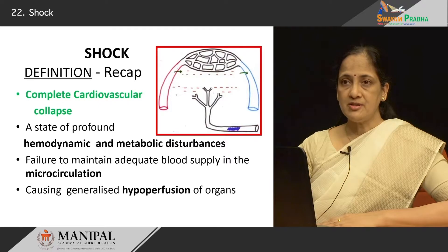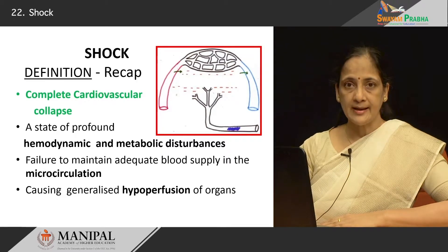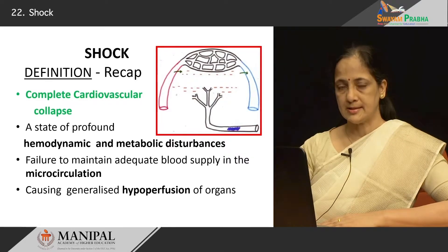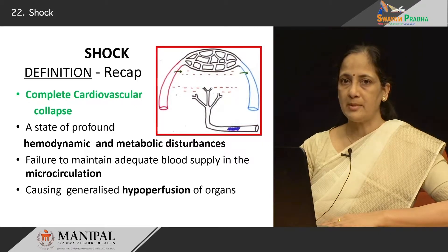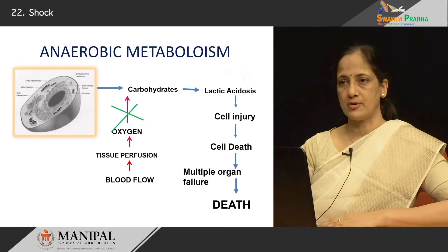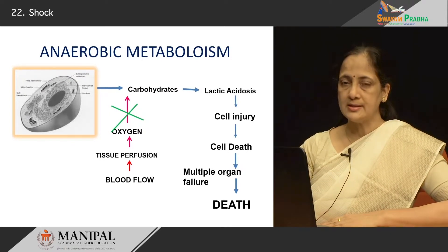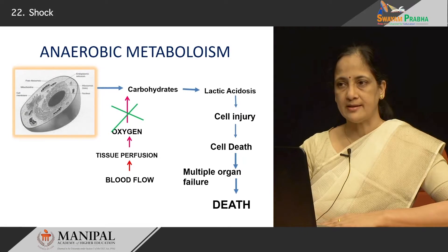The cells which were initially reversibly injured become irreversibly injured until finally there is cell death. So let us recap the definition of shock. There is complete cardiovascular collapse — it is generalized, it is diffuse — wherein there is profound hemodynamic and metabolic disturbances characterized by a failure to maintain blood flow in the microcirculation, resulting in generalized hypoperfusion of organs. Therefore, there will be involvement of a large number of organs, tissues, and cells, resulting in multi-organ failure and finally being fatal to the patient.